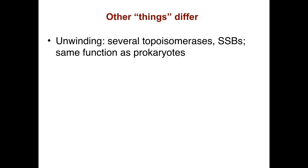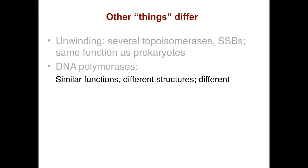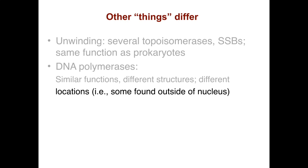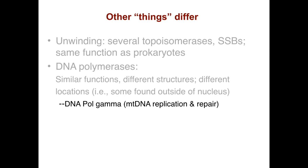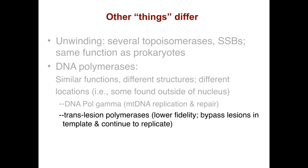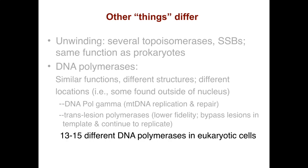There are other differences in eukaryotes. The unwinding is more complicated; there are several topoisomerases and single-stranded binding proteins with similar functions to those in prokaryotes. There are multiple DNA polymerases with different structures and different locations — some are even found outside of the nucleus. For example, DNA polymerase gamma is involved in mitochondrial DNA replication and repair. There are also translesion polymerases with lower fidelity that can bypass lesions in the template and continue to replicate, which may be important in cases of DNA damage. Overall, there are 13 to 15 different DNA polymerases in eukaryotic cells.